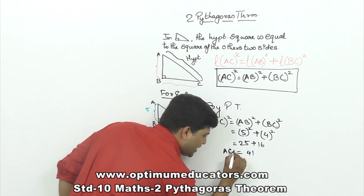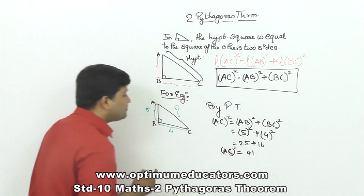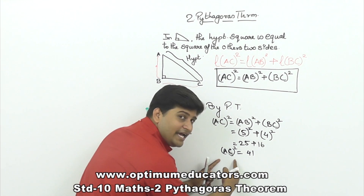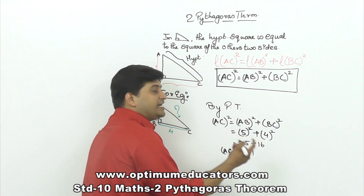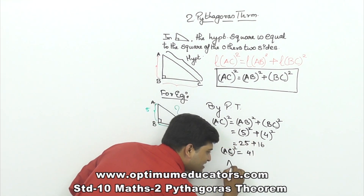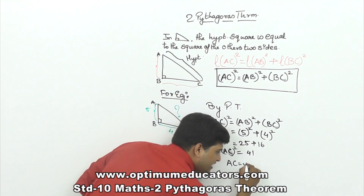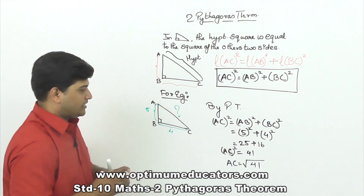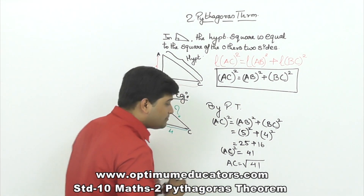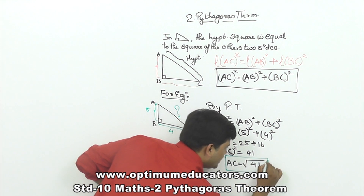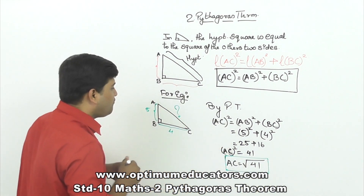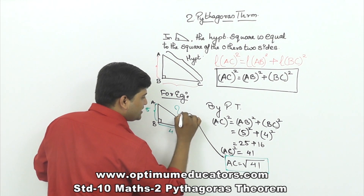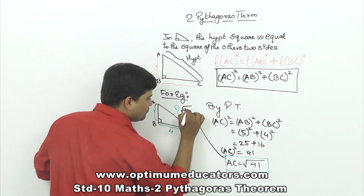I got AC square equals 41, but I need length AC. So I need to take the square root. Therefore, length AC is nothing but root 41. By the help of Pythagorean theorem, length AC equals root 41.